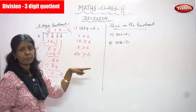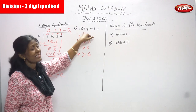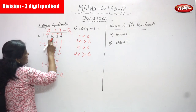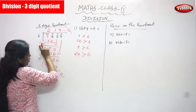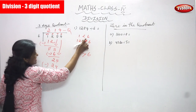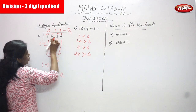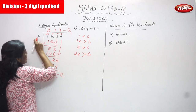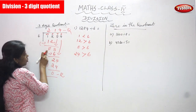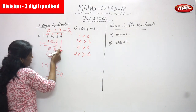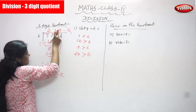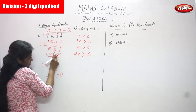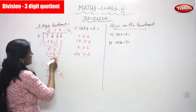Let me repeat: 1284 divided by 6. Write the place values — thousands, hundreds, tens, and ones. Compare 1 and 6: 1 is less than 6, so take the next digit. Combine 1 and 2 to get 12. 12 is greater than 6; 6 twos are 12. Write 2 in the quotient. 12 minus 12 is zero. Bring down 8: 6 ones are 6, write 1 in the quotient. Write 6 below the 8; 8 minus 6 equals 2.